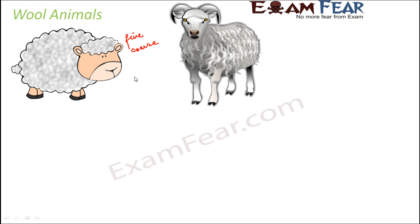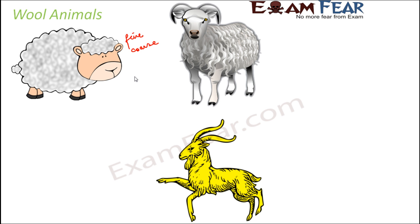Not only sheep, but goats can also produce different varieties of wool. For example, the pashmina shawls which are very popular from Kashmir come from Kashmiri goats. If you have ever seen a pashmina shawl or sweater, the wool is very soft and at the same time very warm — it has both the advantages of being soft and light while also being very warm.